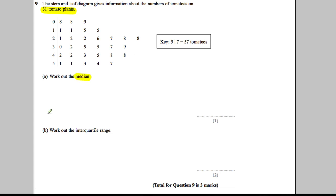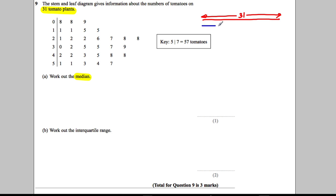It says work out the median. The median is the middle number. With 31 numbers, the middle must have 15 numbers on one side, then the 16th number in the middle, and 15 more numbers on the other side.